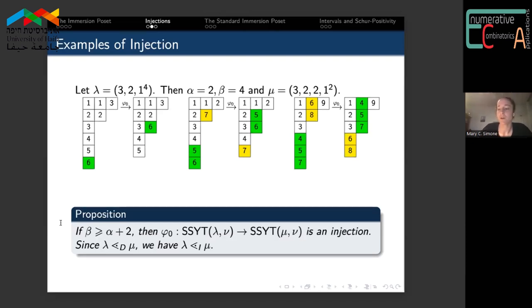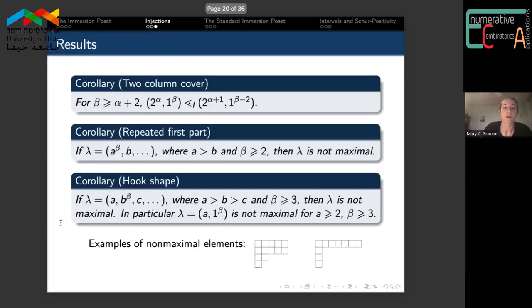Already from this first definition of injection, we have a couple of corollaries. The first is this collection of cover relations among all two-column partitions in the immersion poset. Our other two corollaries highlight shapes λ that will not be maximal in the immersion poset. The first interesting shapes are those which have repeated first part, and the second are hook shapes which have leg length greater than or equal to three.